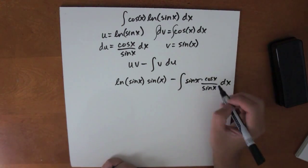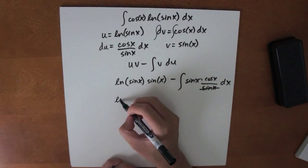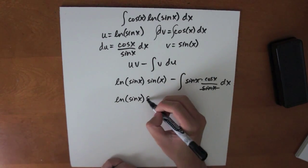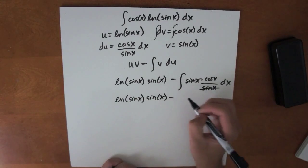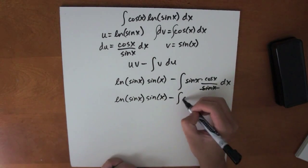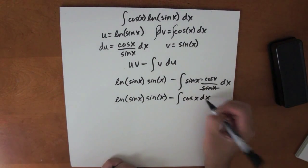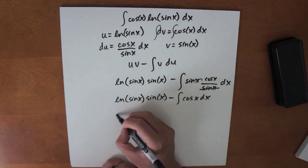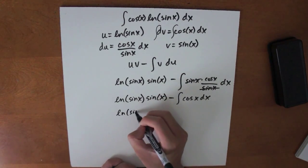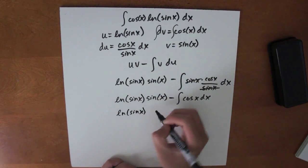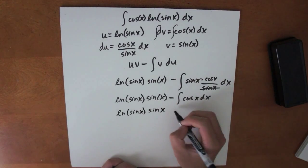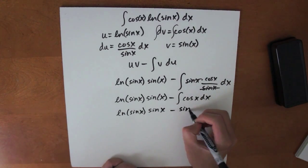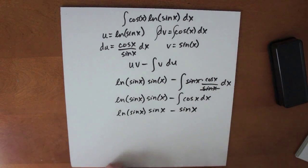Here, the sin x cancels, so we get ln sin x times sin x minus the integral of cos x dx. This is very easy to evaluate — the final answer is ln sin x times sin x minus sin x.